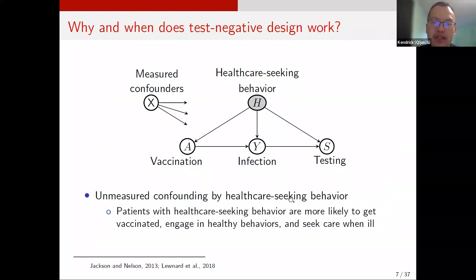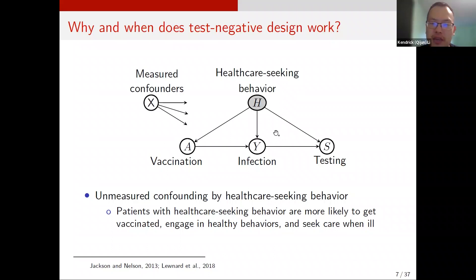To proceed, we first need to understand why and when a test negative design works. We use a directed acyclic graph (DAG) to illustrate the relationship between variables, where A is vaccination, Y is infection, and S is a binary indicator of being tested and selected into the study sample. A major concern in post-market vaccine studies is confounding by healthcare-seeking behavior, because vaccinated patients are more likely those who adopt a healthier lifestyle — more willing to lower infection risk by wearing a mask or avoiding crowds — and when they feel ill, more likely to go to clinics and seek care.